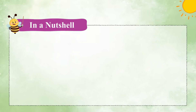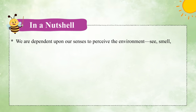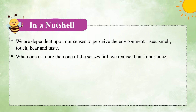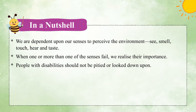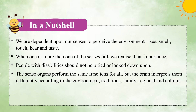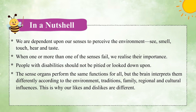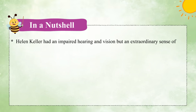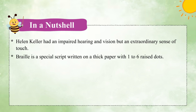In a nutshell, we are dependent upon our senses to perceive the environment — see, smell, touch, hear and taste. When one or more of the senses fail, we realize their importance. People with disabilities should not be pitied or looked down upon. The sense organs perform the same functions for all, but the brain interprets them differently according to the environment, traditions, family, and regional and cultural influences. This is why our likes and dislikes are different. Helen Keller had an impaired hearing and vision but an extraordinary sense of touch. Braille is a special script written on thick paper with one to six raised dots.